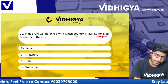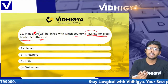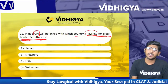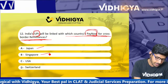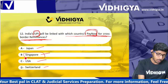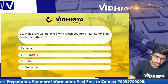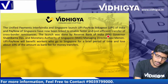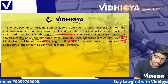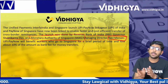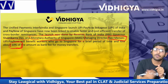India's UPI will be linked with which country's PayNow for cross-border remittances? Options are: Japan, Singapore, USA, and Switzerland. The correct answer is Singapore — UPI has recently been linked with Singapore's PayNow for cross-border remittances. RBI Governor Shaktikanta Das and Monetary Authority of Singapore Managing Director Ravi Menon signed this agreement. A fee of 10% of the amount will be charged for money transfers.